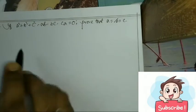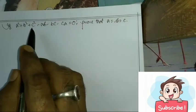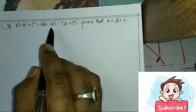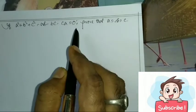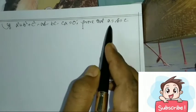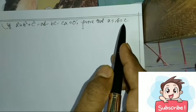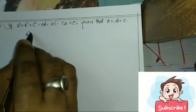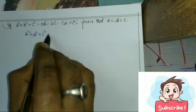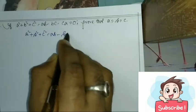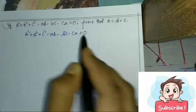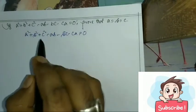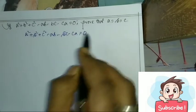The question is: if a² + b² + c² - ab - bc - ca = 0, prove that a equals b equals c. Given that a² + b² + c² - ab - bc - ca = 0.